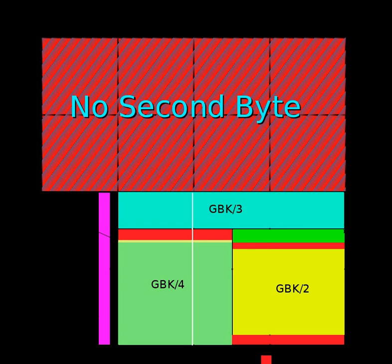Windows 2000 can support the GB18030 encoding if the GB18030 support package is installed. Windows XP can support it natively. The open-source PostgreSQL database supports GB18030 through its full support for UTF-8, i.e. by converting it to and from UTF-8. Similarly, Microsoft SQL Server supports GB18030 by conversion to and from UTF-16. More specifically, supporting the GB18030 encoding on Windows means that code page 54936 is supported by Multibyte to Widechar and Widechar to Multibyte.